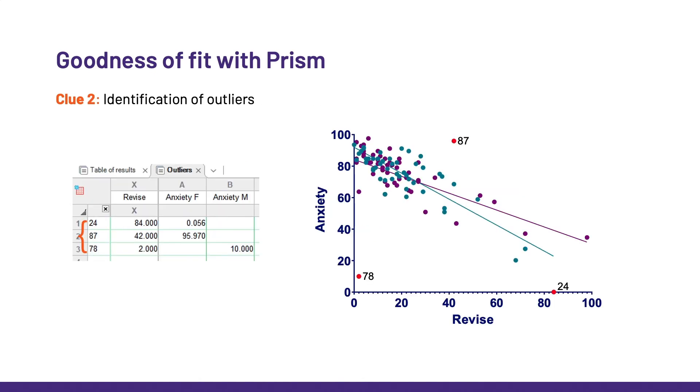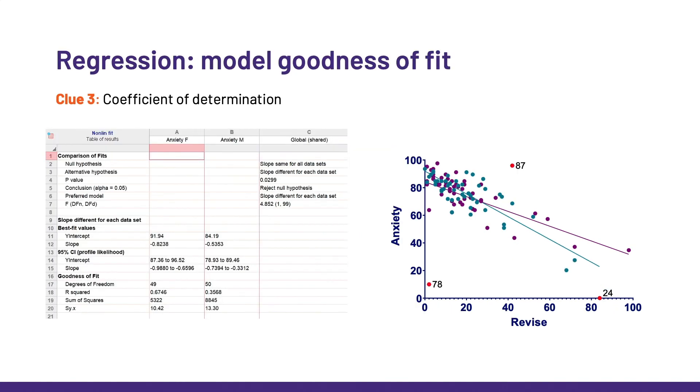Okay, so as suspected, he is an official outlier, along with two other values with ID 87 and 78, which were pretty obvious, actually. 24, perhaps a little less so. Before we decide what to do about them, let's check the other clues to get a full picture.